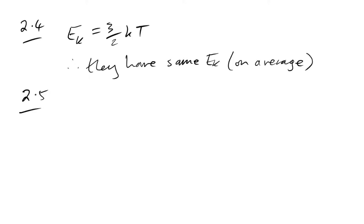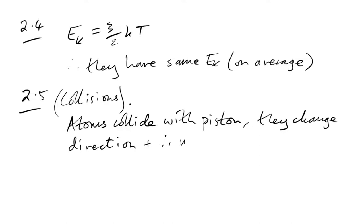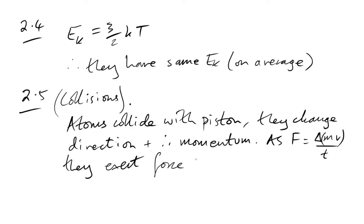Why is pressure exerted? It's all to do with collisions. Atoms collide with the piston, change direction and therefore momentum. Since force = rate of change of momentum, they exert a force on the piston. Whenever kinetic theory questions come up about pressure, it's all about this change in momentum of the particles.